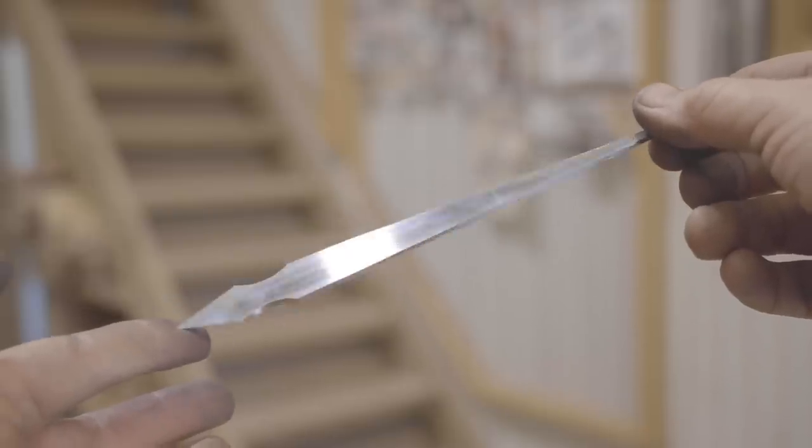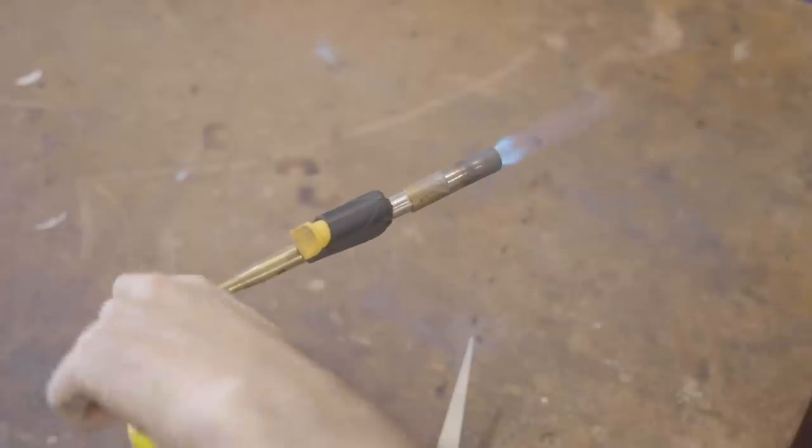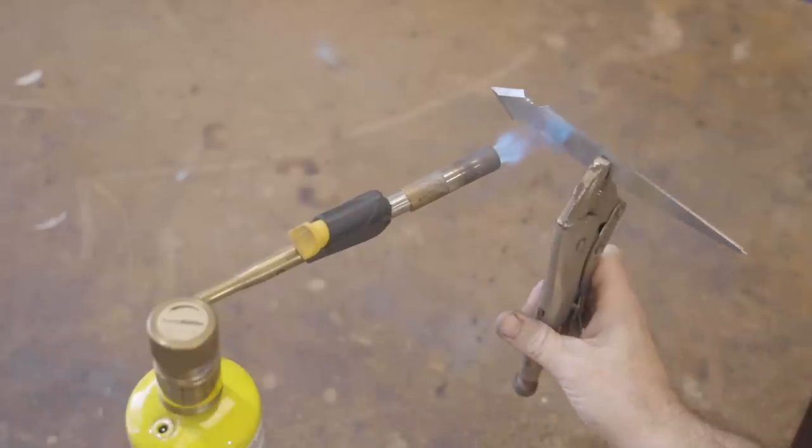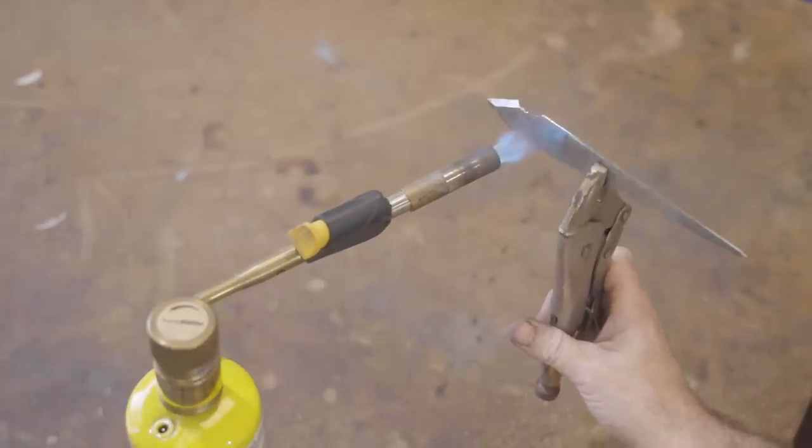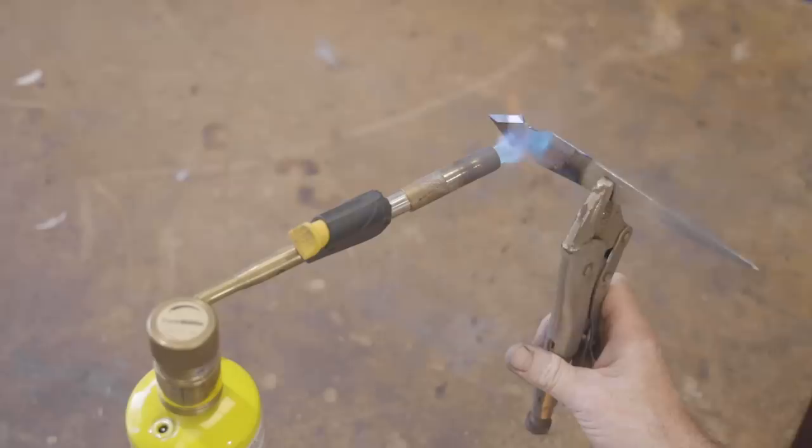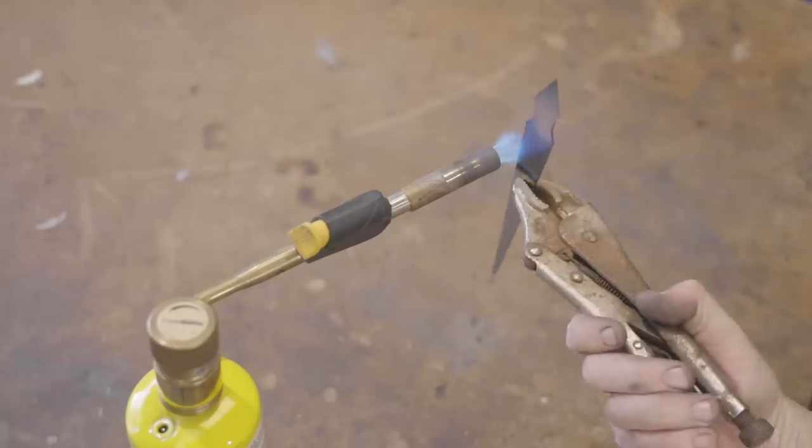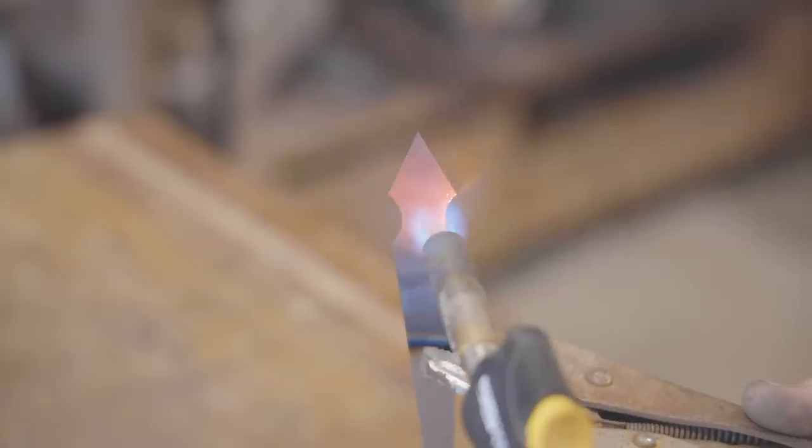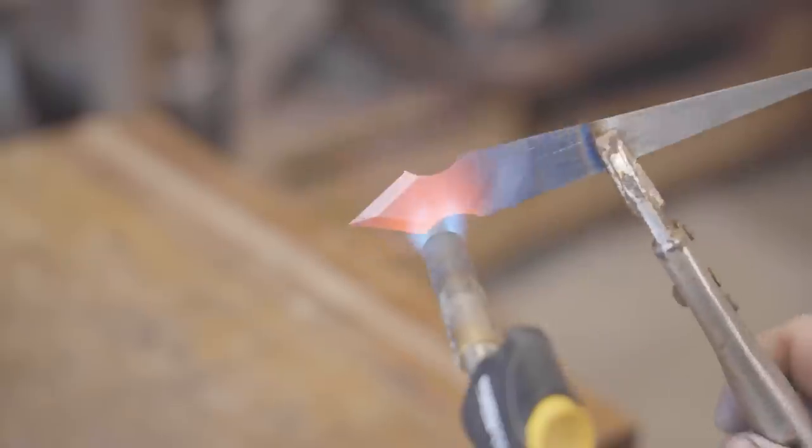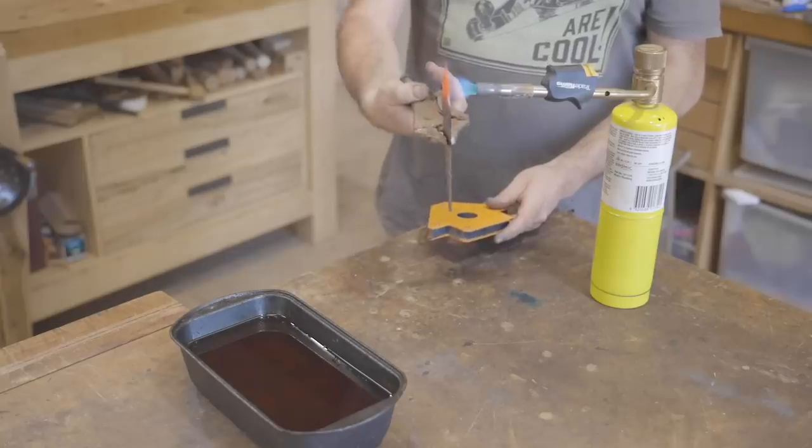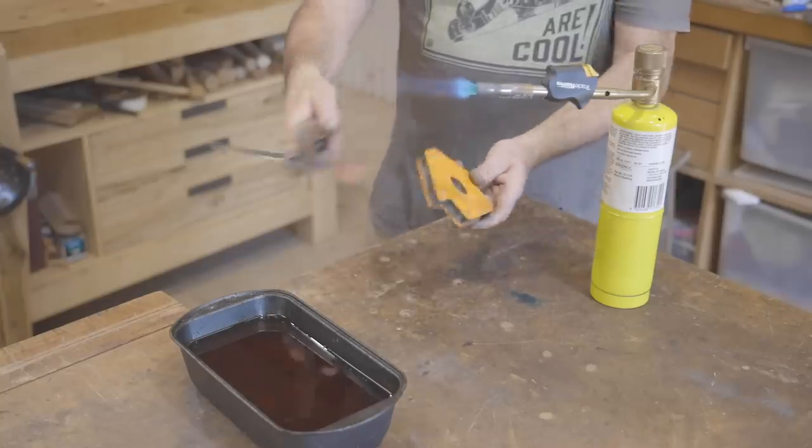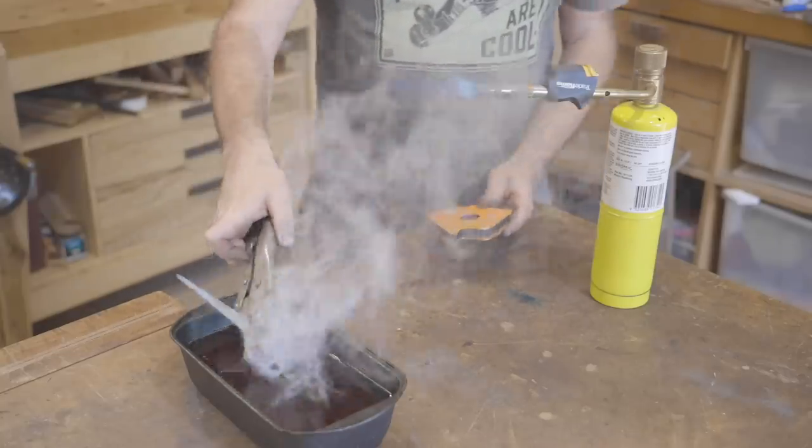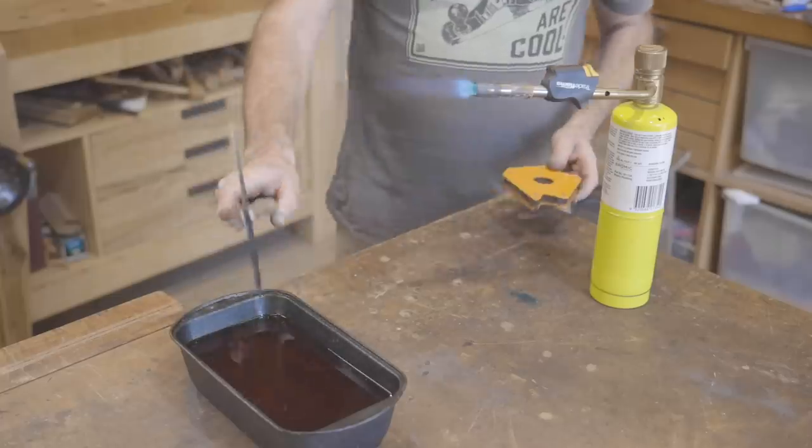To heat treat a tool like this, you don't need anything fancy, all you need is a blowtorch. I'm directing the heat just away from the tip so I don't burn that too much. And when it gets up to a cherry red, I'll check it with a magnet and quench it in vegetable oil. That's one end hardened, now I need to do the other.